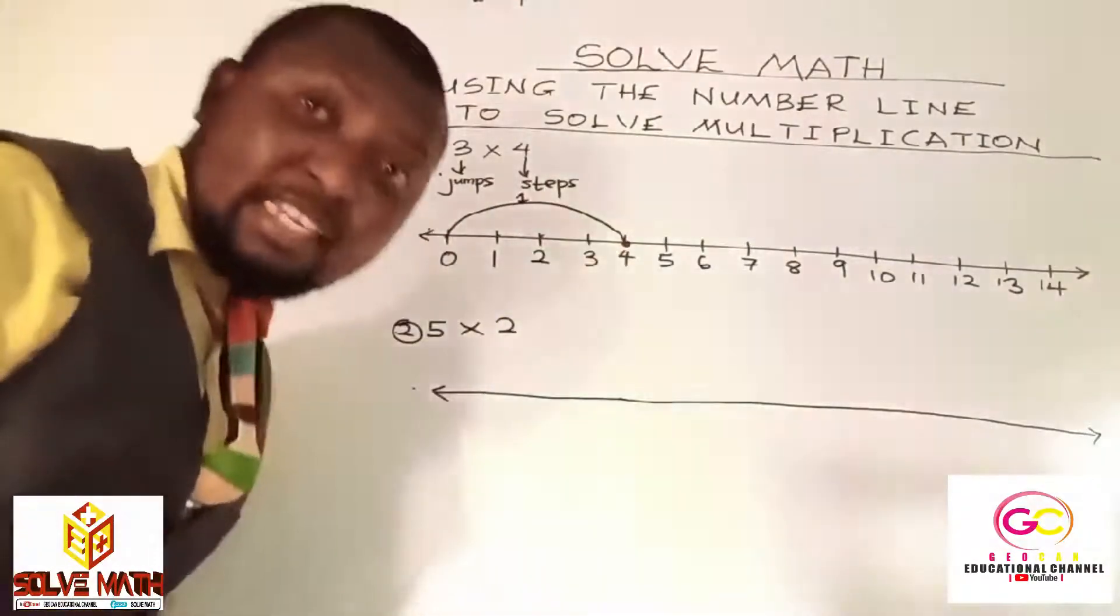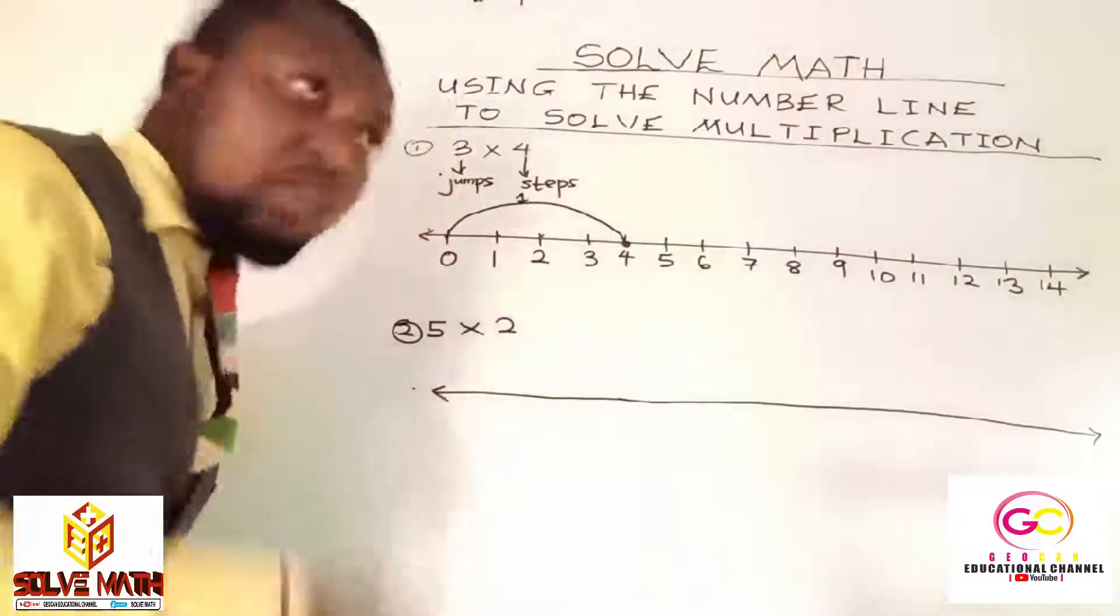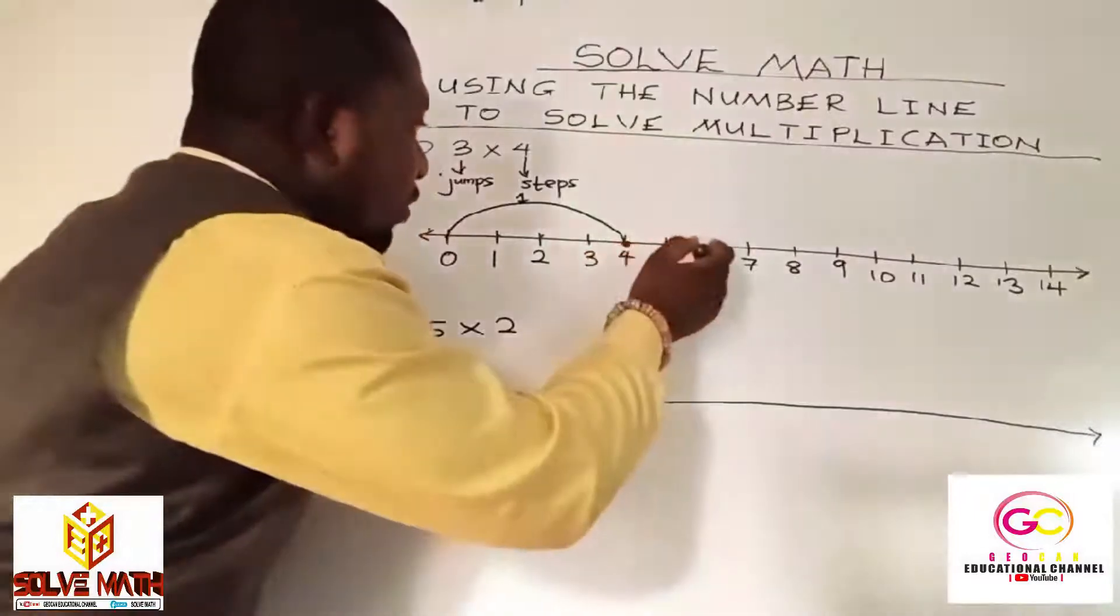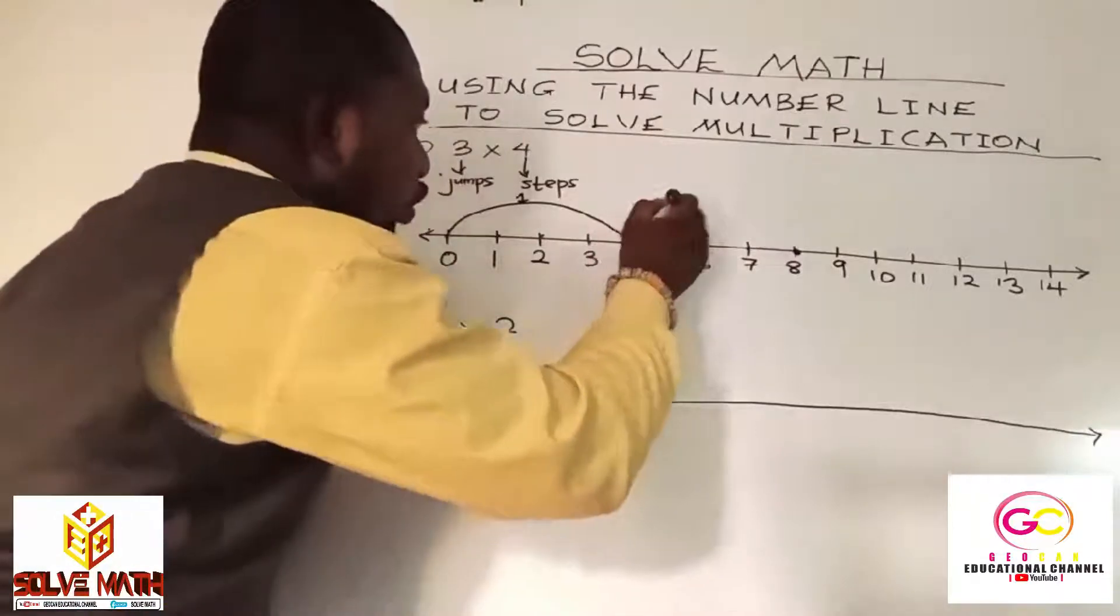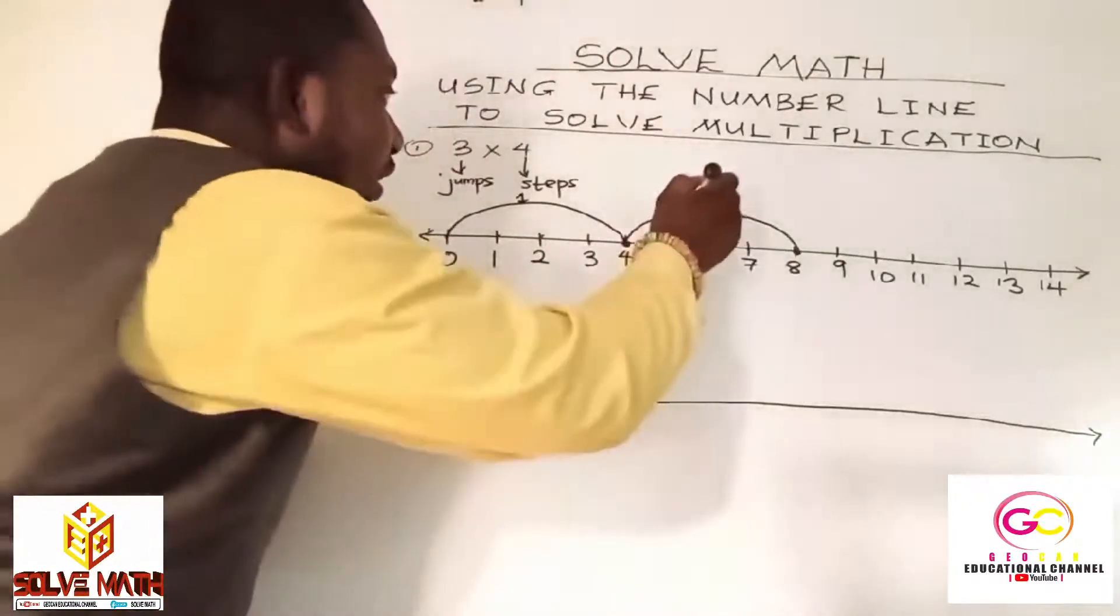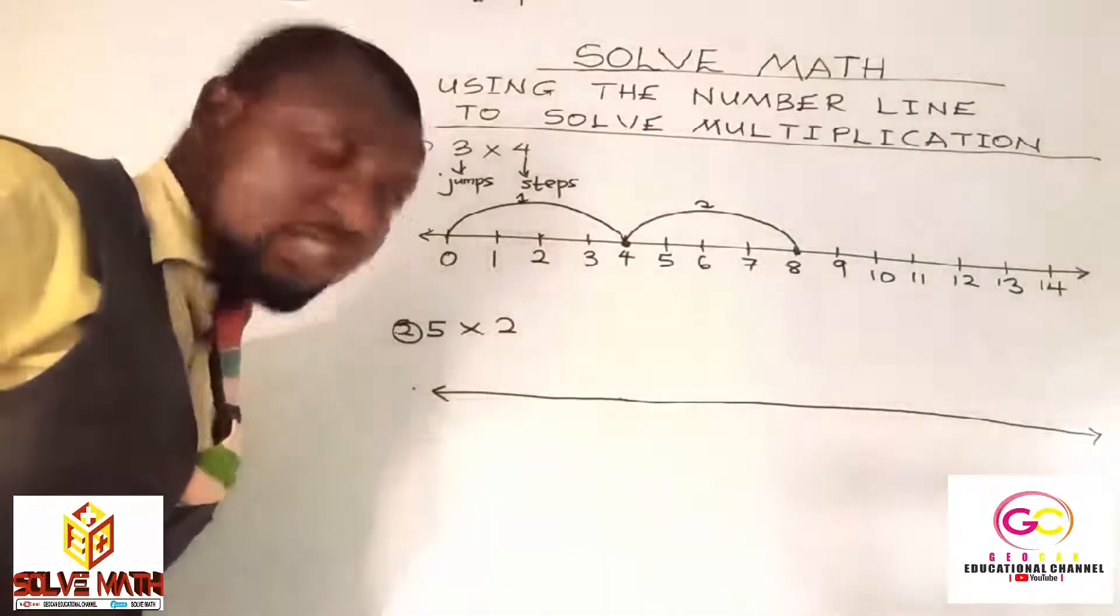Let's move to our second jump. Remember, it's three jumps. And in each jump, we have four steps. So, let's move another four steps again. One, two, three, four. You punch there, then you draw your jump. That's your arc to serve as your jump. So, this is our second jump.